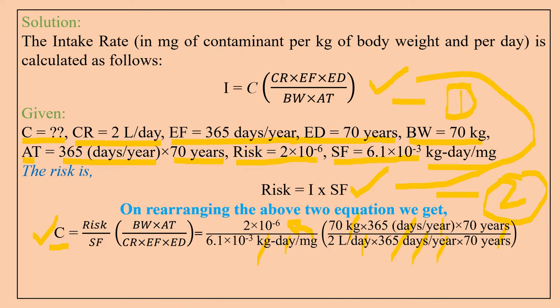When we solve, our value is 11.47 into 10 to the power minus 3 milligrams per liter. After unit conversion from milligrams to micrograms (multiplying by 10 to the power minus 3), the final answer is in micrograms per liter.